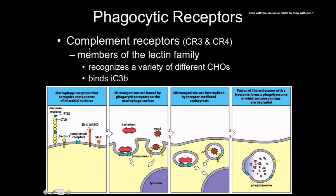Also under the lectin category are complement receptors CR3 and CR4. From the last chapter, these bind to iC3b, the inactive cleaved form of C3 convertase. They also recognize a large number of C-type lectin domains. Examples of pathogens recognized include Leishmania, Candida, Histoplasma, and Bordetella pertussis — a very wide range of substrates.